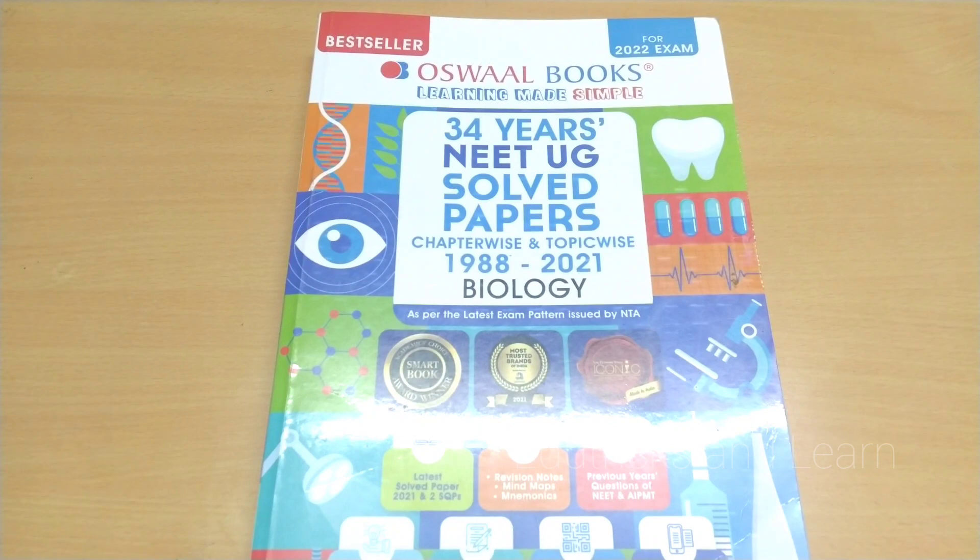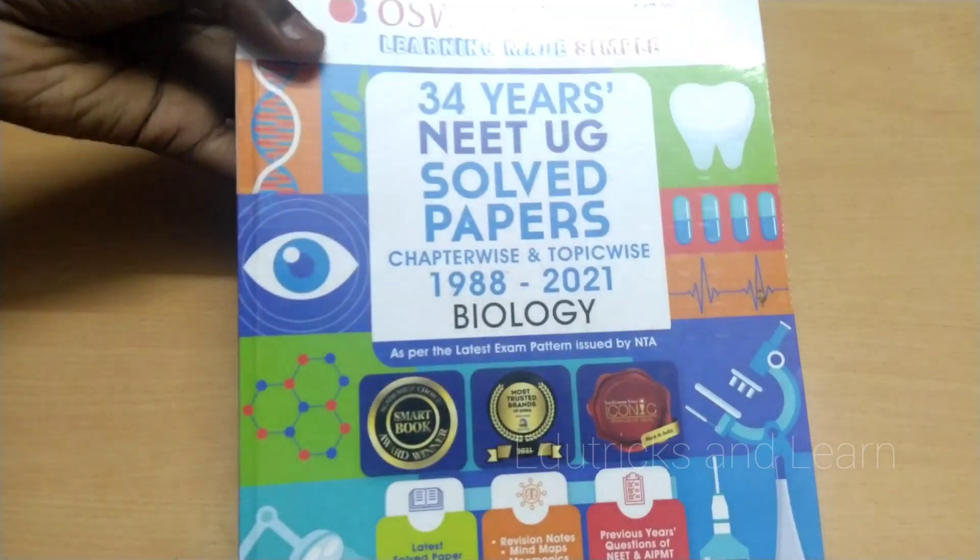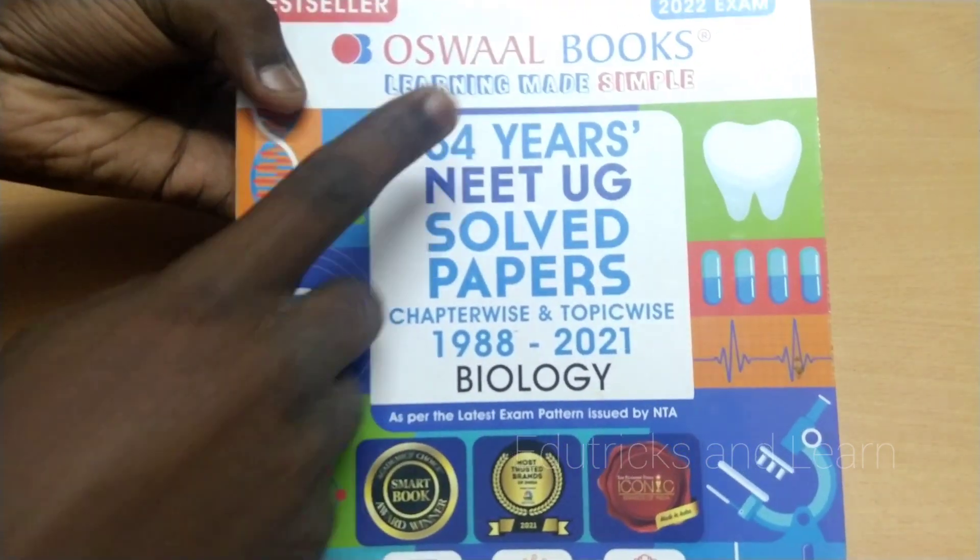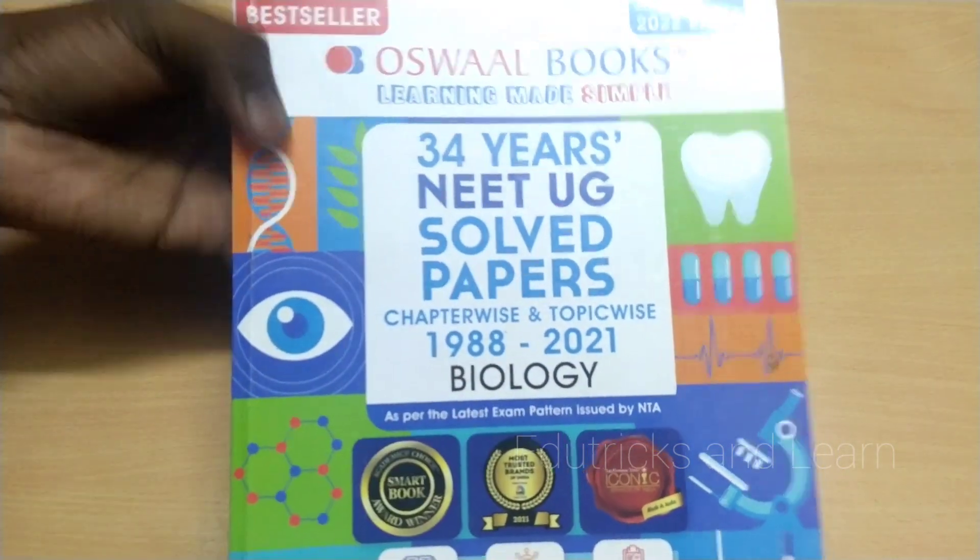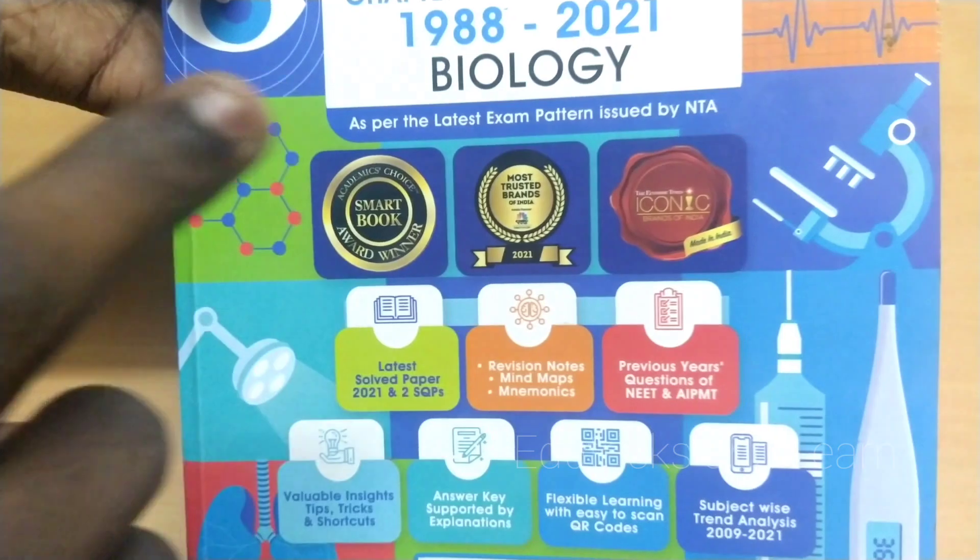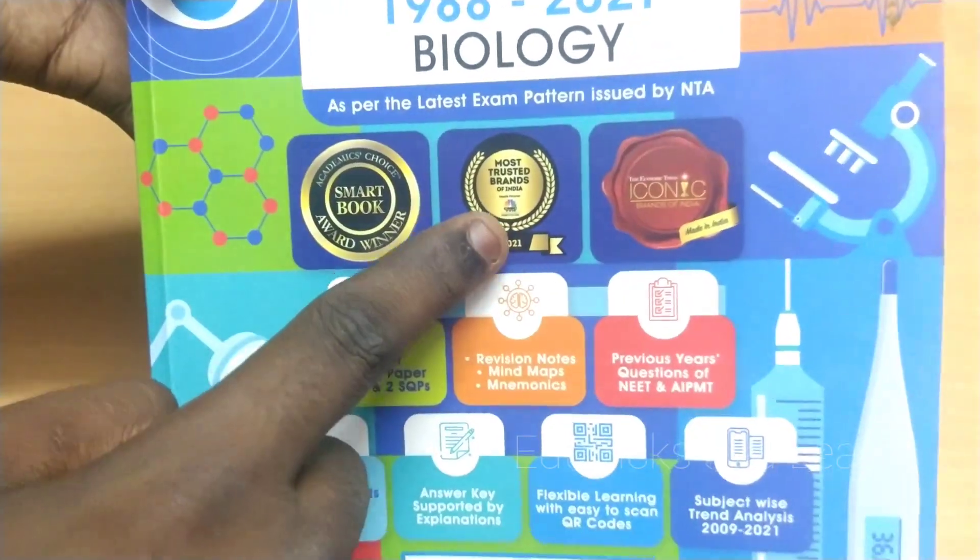We are going to get a deep knowledge and understanding from the review of Oswaal Books 34 Years NEET UG Solved Papers for Biology. This book contains some specialties: it's a Smart Book Award winner, Most Trusted Brand of India, Iconic Brands of India.